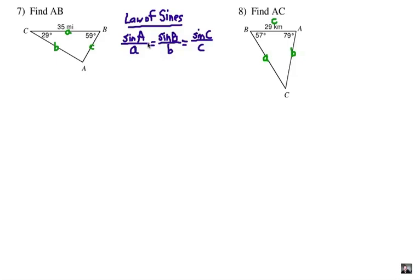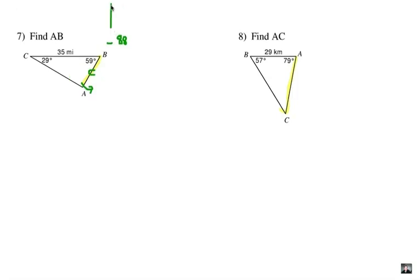Here's the Law of Sines ratios, and we need to pick the right combinations here so we have a proportion to solve. Notice that the 35 miles measurement I have here is opposite angle A and I don't know that measurement, but I can figure it out. These two angles here add up to 88 degrees. All three are going to add up to 180, so I can easily subtract and figure out what that is: 92 degrees. Now that's going to be important to know as we fill out our Law of Sines. We're going to use sine C over C equals sine A over A because we know 3 of the 4 of those.